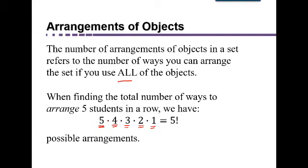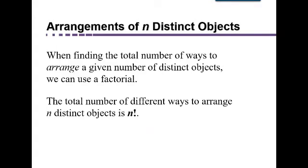we multiply the number of ways to complete each part of the task, and we get 5 factorial. So whenever you're trying to find a total number of ways to arrange a certain number of objects, distinct objects, we can use a factorial.